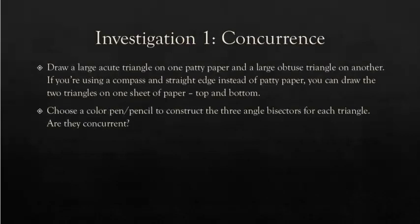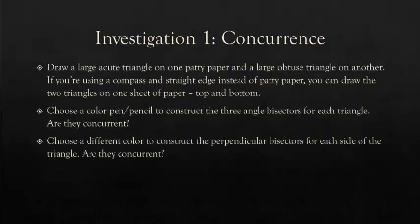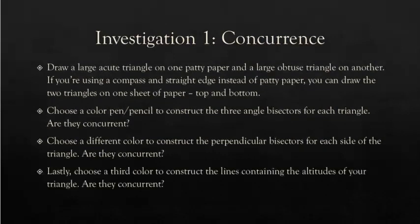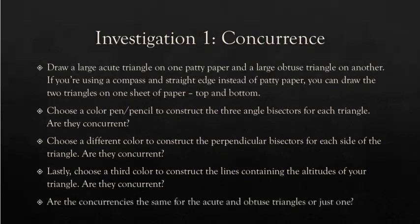Choose a color pen or pencil to construct the three angle bisectors for each triangle. Are they concurrent? Do all three angle bisectors meet at one point? Then choose a second color to construct the perpendicular bisectors for each side of the triangle. Are they concurrent? Do they all meet at one point? Lastly, choose a third color to construct the lines containing the altitudes of your triangle. Are they concurrent? Are the concurrences the same for the acute and the obtuse triangle?